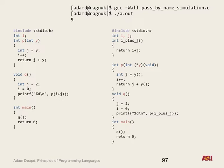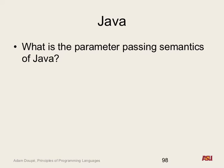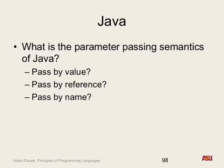Whose favorite programming language is Java? Java folks - what is the parameter passing semantics of Java? Pass by value, pass by reference, or pass by name? It's a little bit of both: if it's a primitive type it's passed by value, if it's a class it's passed by reference.